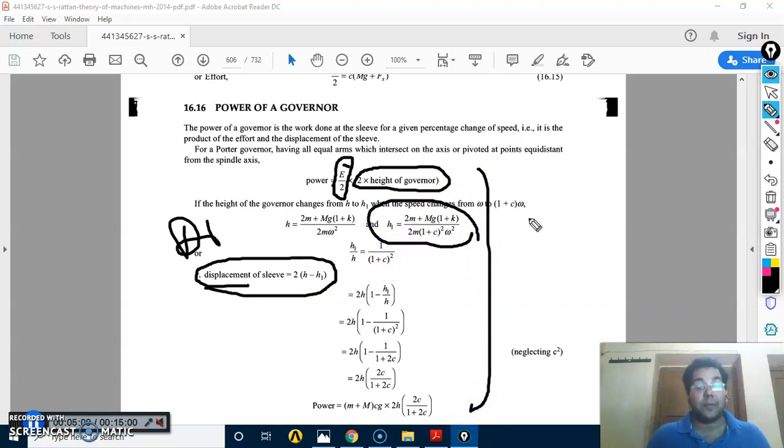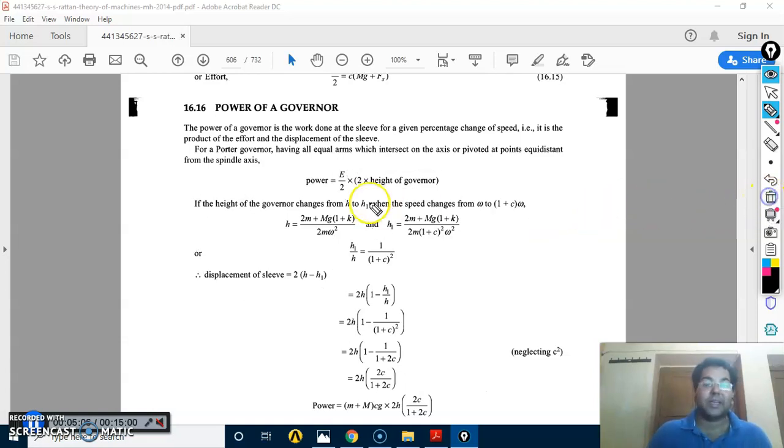For the Porter, what you have to do, you have to do it for Hartnell. In the exam, write the derivation for power of the Hartnell, write the derivation for the power of the Porter governor. Displacement of the sleeve, effort—the rest of the formula you have to just find out the value and calculate.